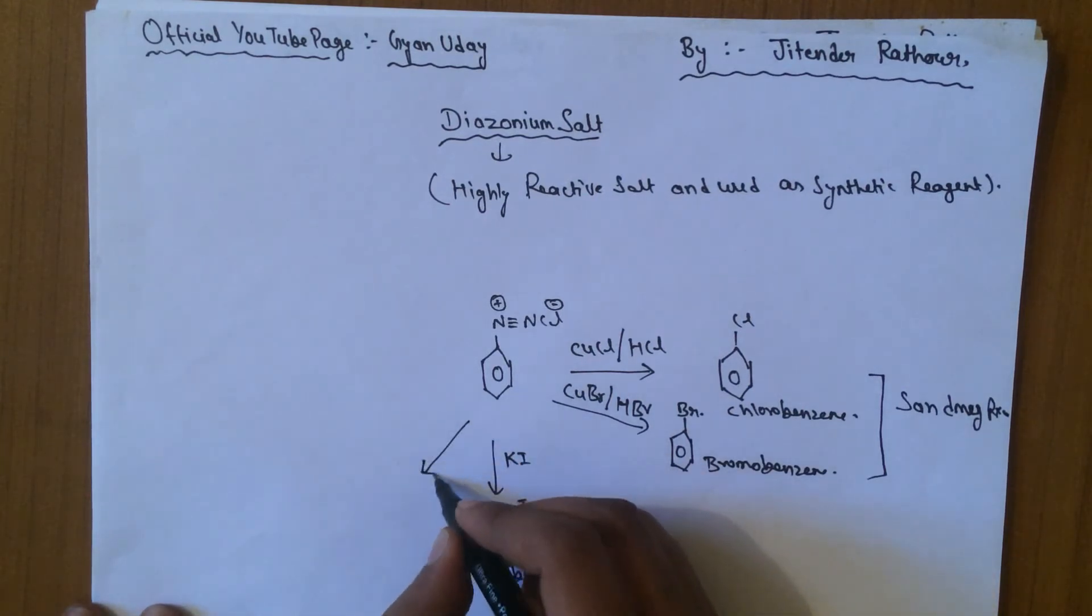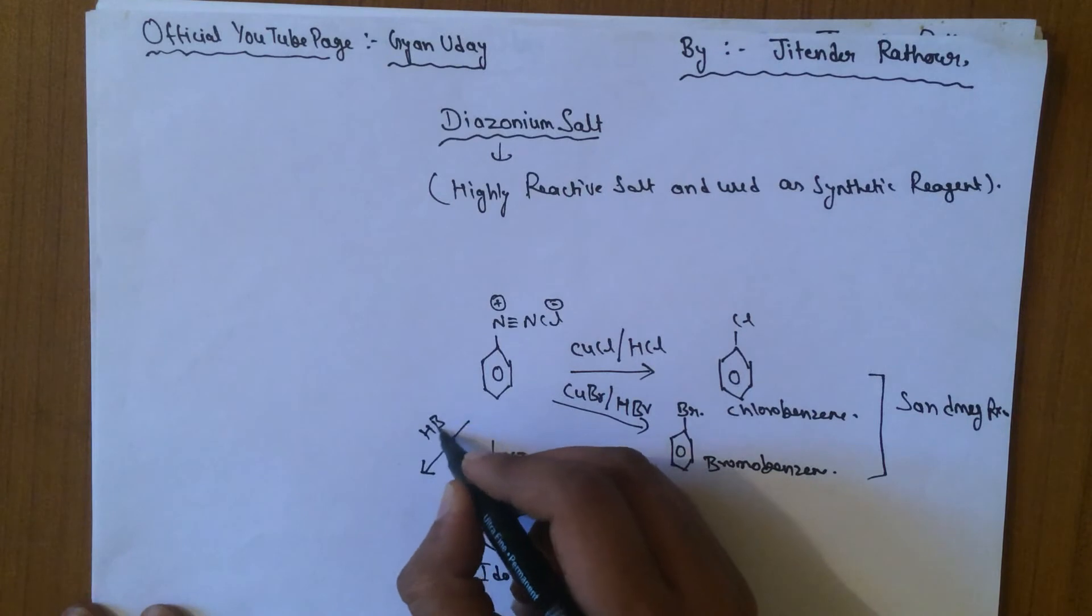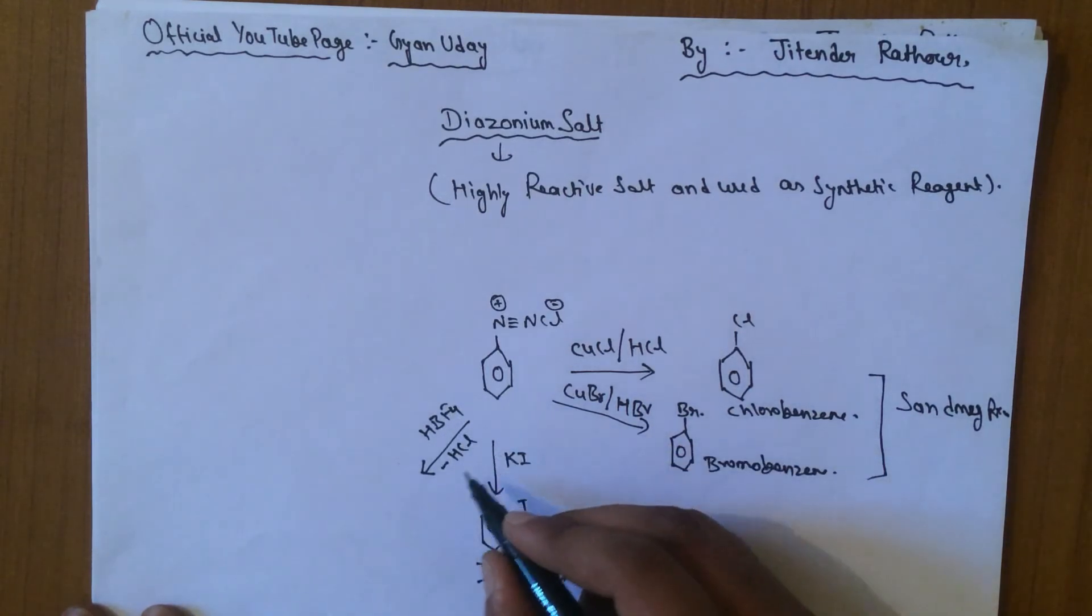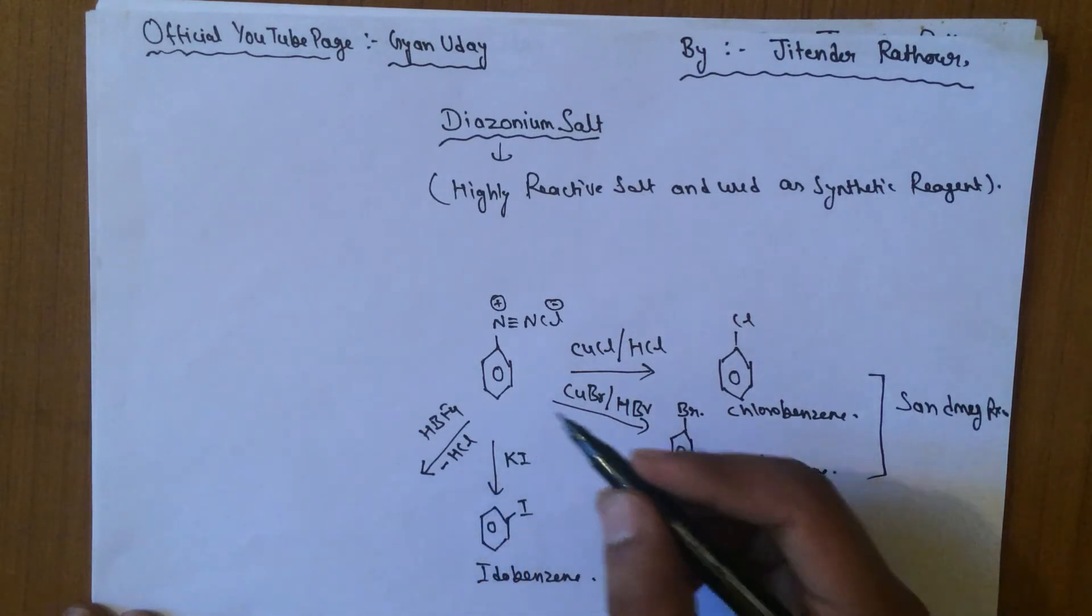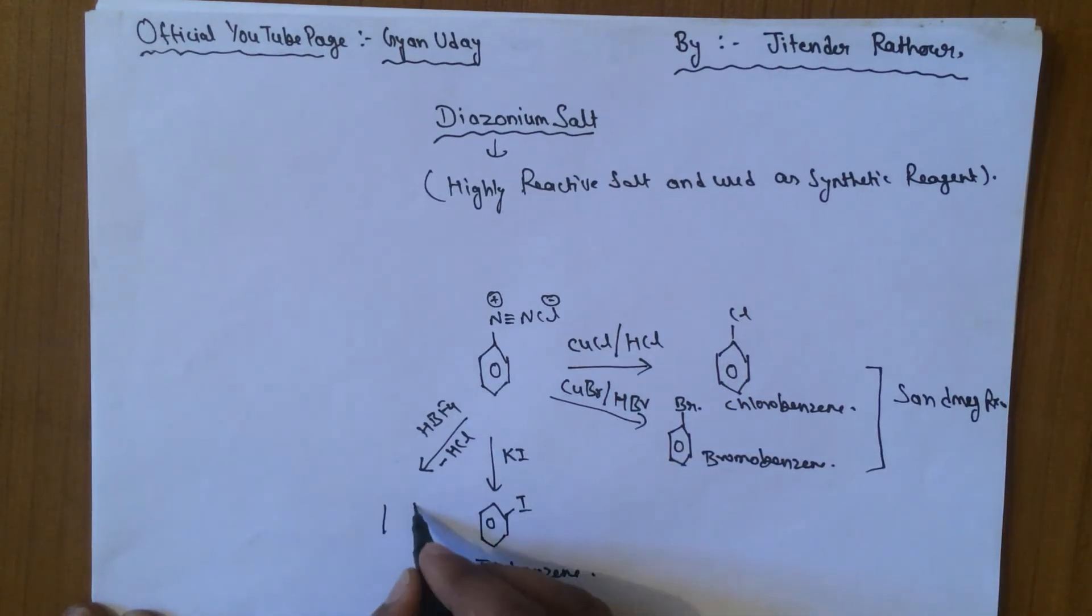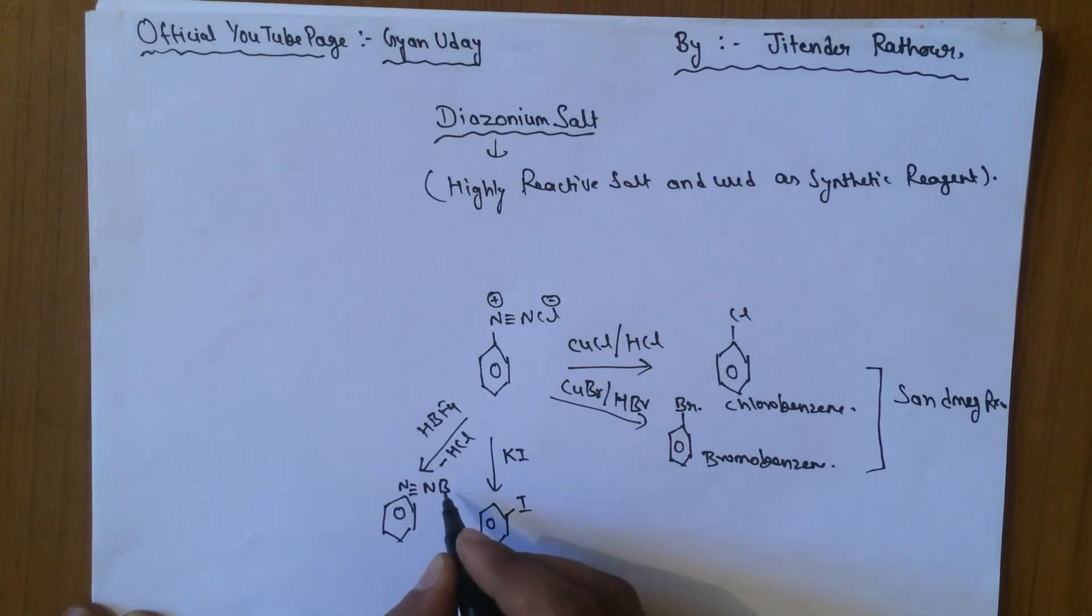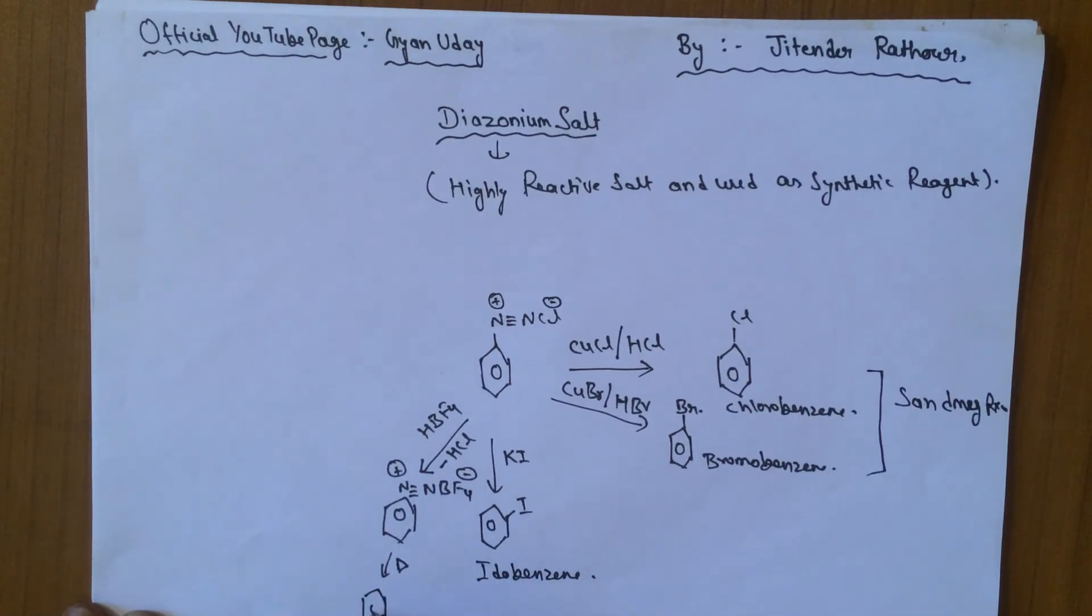Next reaction shows the ejection of HCl and the product has negative on fluorine and positive on nitrogen, and after heating, fluorobenzene is formed.